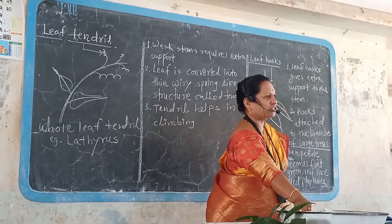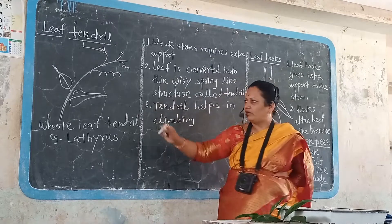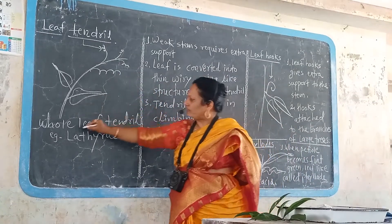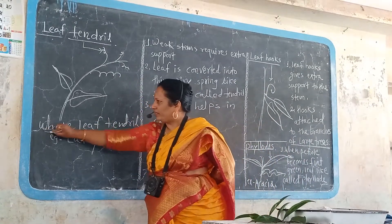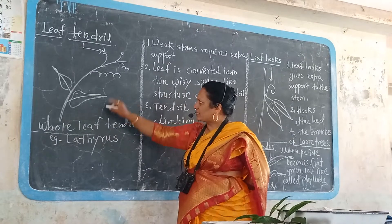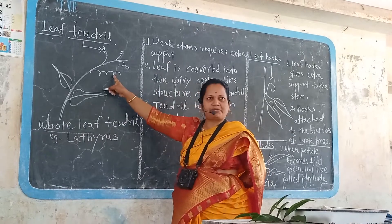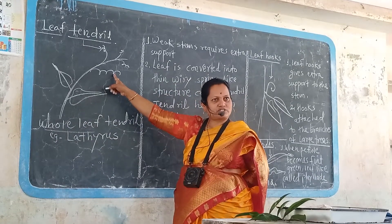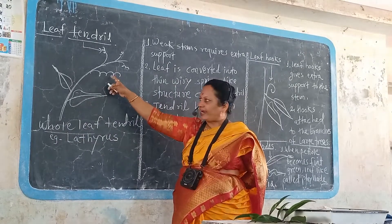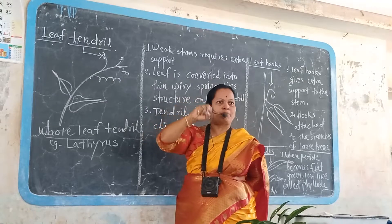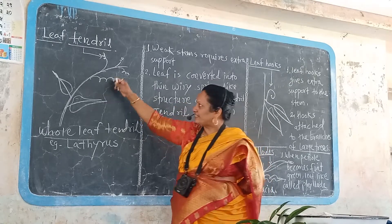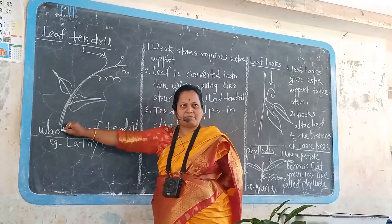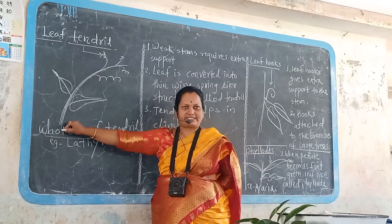For extra additional support, there is a production of leaf tendrils. That means the entire or whole leaf is converted into a spring-like, wiry coiled structure. That spring-like structure gets attached to the support and gives extra additional support to the plant stem.